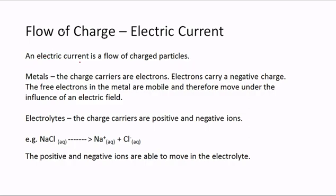If the solution conducts electricity, we expect to get a reading on the ammeter. An electric current is a flow of charged particles. In a metal, the charge carriers are electrons, which carry a negative charge. The free electrons in the metal are mobile and move under the influence of an electric field, so metals conduct electricity because they have free mobile electrons.